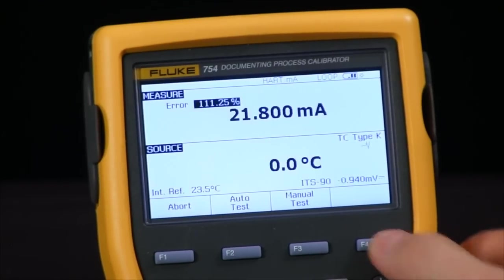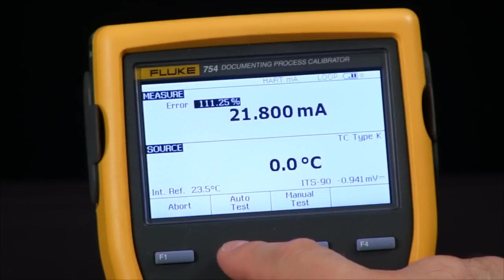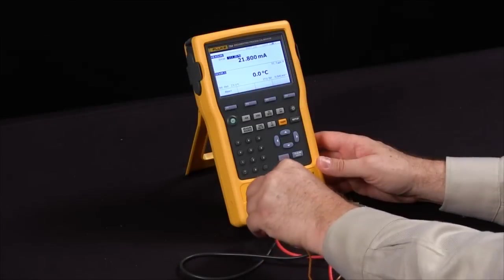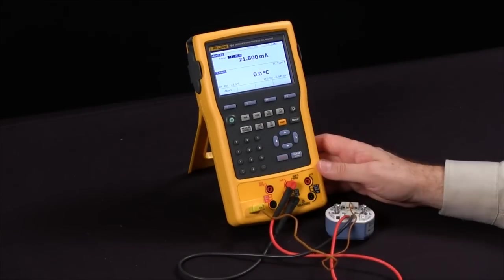What I can do now is just start an auto test and the 754 will source through the thermocouple and it will read back the milliamp values.